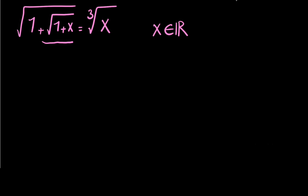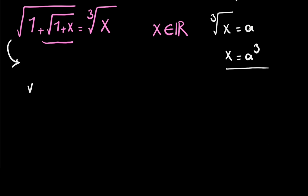For the first step, I want to write cube root of x as a, so it means x will be equal to a cubed, and instead of x we can write a cubed. So we have 1 plus square root of 1 plus a cubed, equal to a.